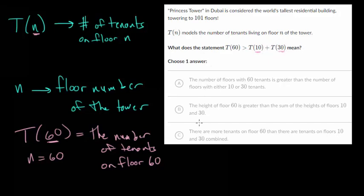So A, the number of floors with 60 tenants is greater than the number of floors with either 10 or 30 tenants. So this is switching them. Since 60 is not the number of tenants, the inside does not represent the number of tenants. It represents which floor you're on. So this is not correct.